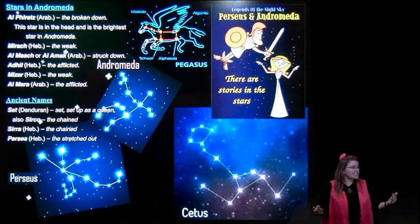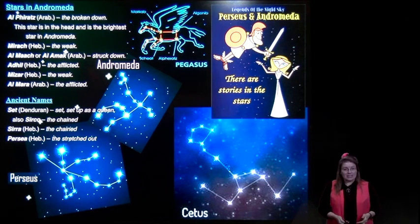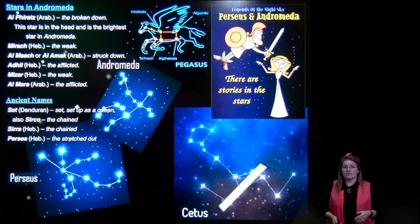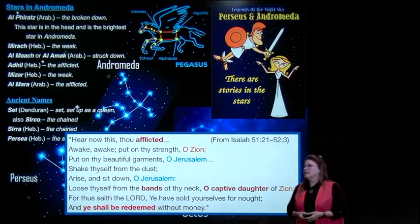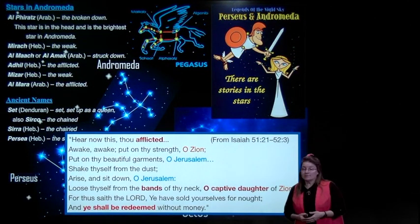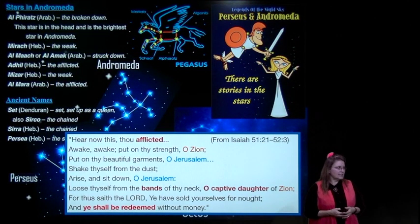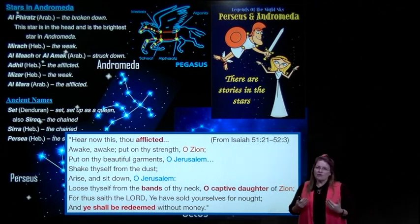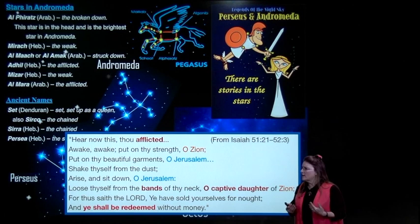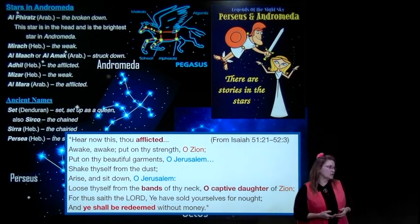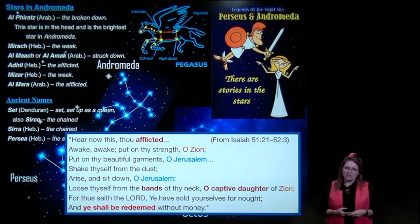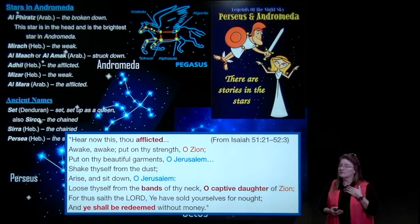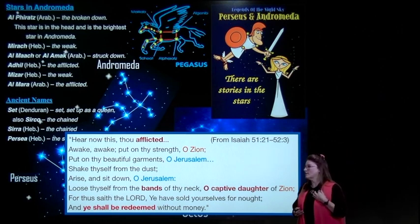We have a similar depiction in Isaiah chapter 51, where it's telling Zion: 'Hear now this, thou afflicted. Awake, awake, put on thy strength, O Zion. Put on thy beautiful garments, O Jerusalem. Shake thyself from the dust. Arise and sit down, O Jerusalem. Loose thyself from the bands of thy neck, O captive daughter of Zion.' So Zion is in trouble. There's a time of affliction in the last days.